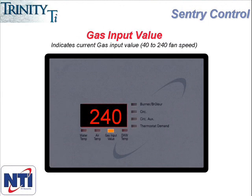The last number in the series is gas input value, which equates to fan speed. The higher the number, the higher the fan speed. When the boiler is at high fire, the fan will be at its highest speed, which is 240, or 195 in the case of the TI-400, which is no longer being produced. The gas input value at low fire is 48 for the 100 and the 150, 40 for the 200, and 35 for the 400.